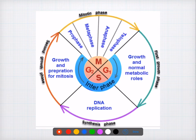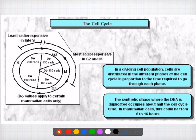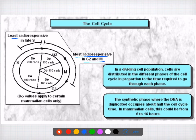Question thirty: the most sensitive phase in the cell division cycle. The most radio-responsive phases are G2 and M phase. The least radio-responsive phase is the late S phase. These two statements are very important: the most radio-responsive phase is G2 and M, whereas the least radio-responsive phase is S phase.